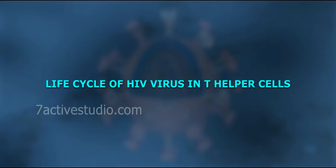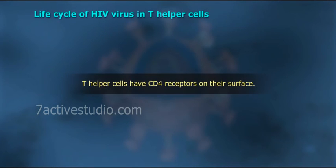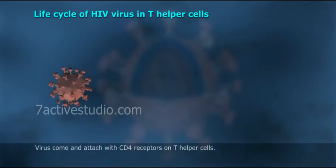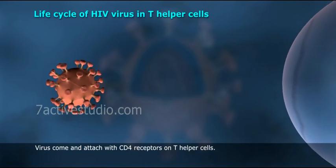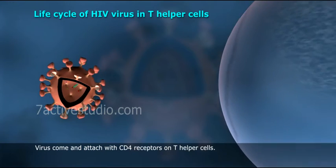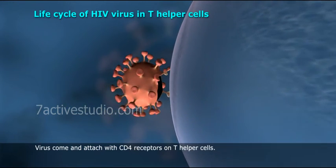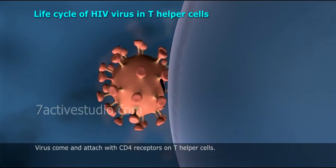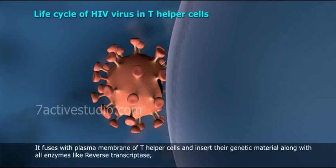Life cycle of HIV virus in T helper cells. T helper cells have CD4 receptors on their surface. The virus comes and attaches with CD4 receptors on T helper cells, and fuses with the plasma membrane of T helper cells.